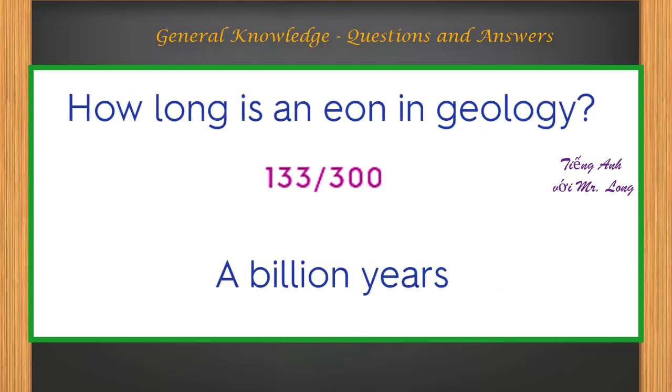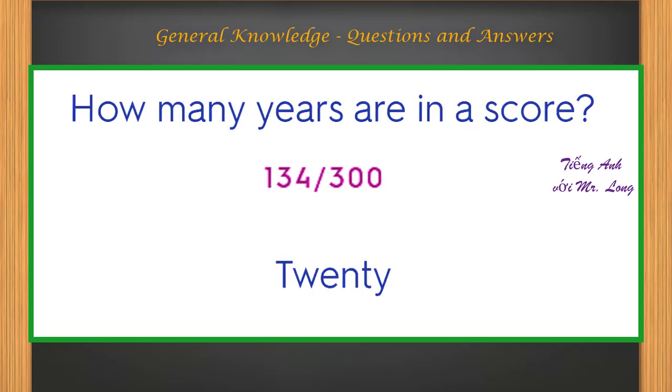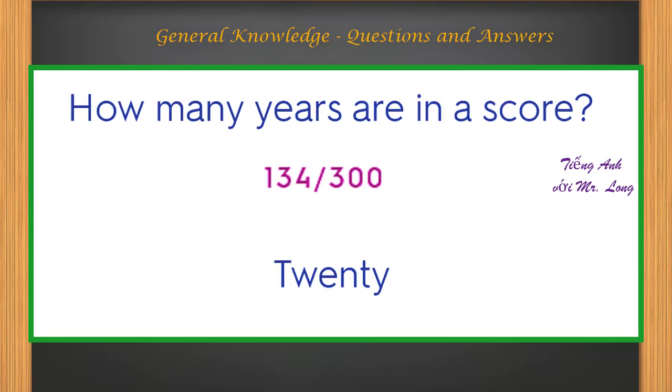How long is an eon in geology? A billion years. How many years are in a score? Twenty.